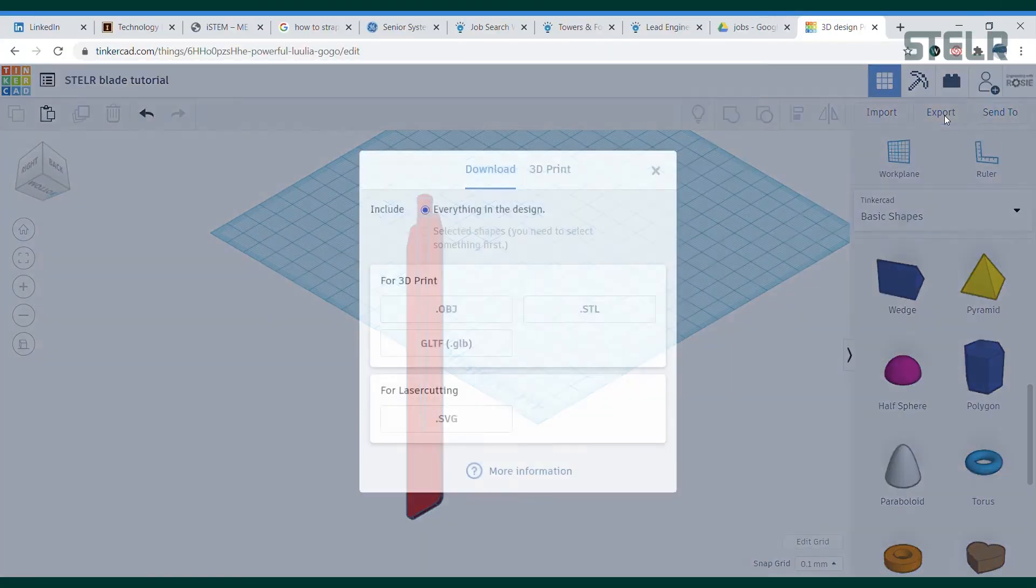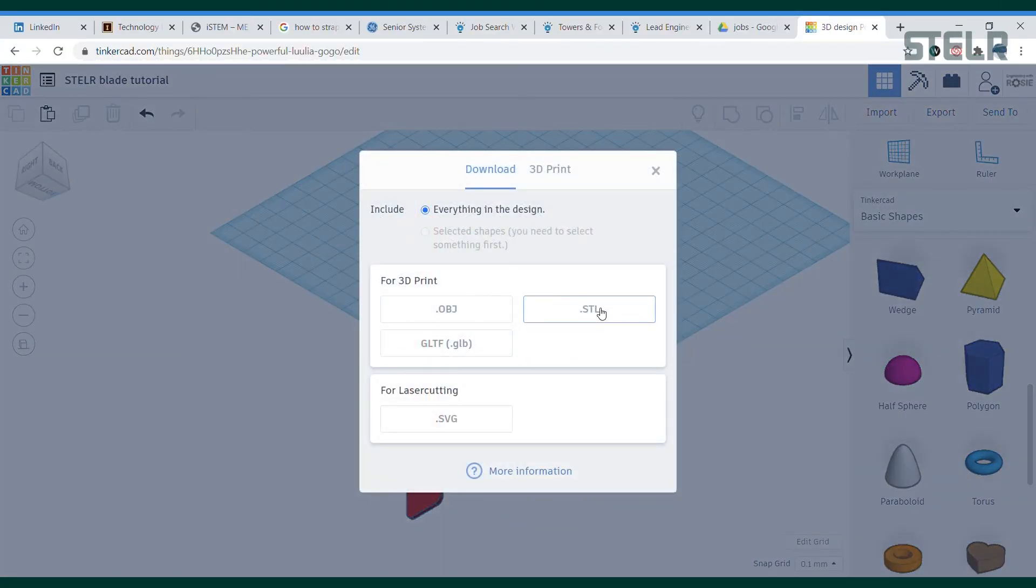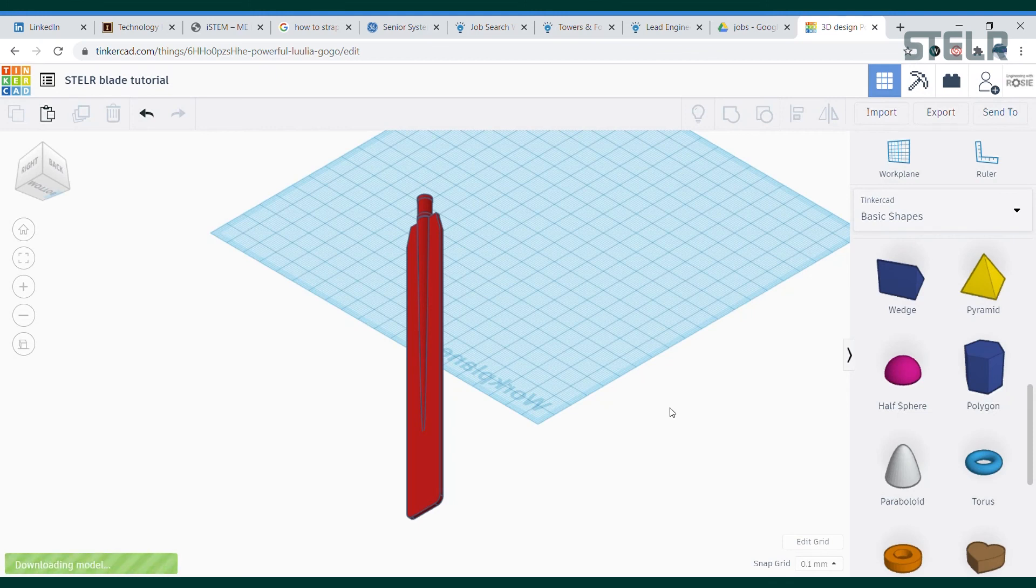Okay great, so then once you've got the blade where you like it you need to export it. You click on export and I need an STL file. The file that you need will depend on what 3D printer or laser cutter that you're using.